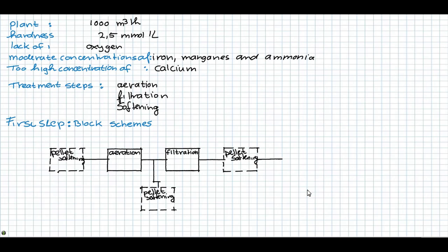Softening before aeration is possible when low concentration of carbon dioxide and phosphate are present in the water to avoid high base dosage and irregular pellet formation.